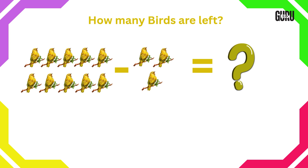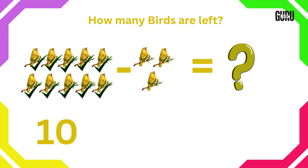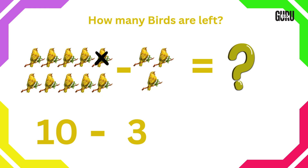How many birds are left? Here we have to do subtraction. Let's count. 1, 2, 3, 4, 5, 6, 7, 8, 9, 10 and 1, 2, 3. So 3 birds need to be crossed out from 10. Now count how many birds are left.